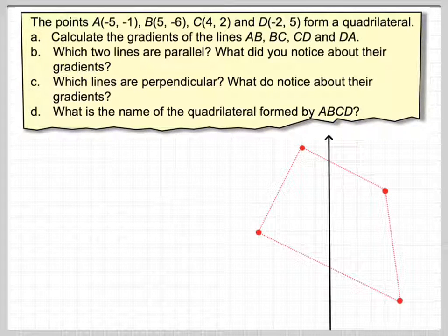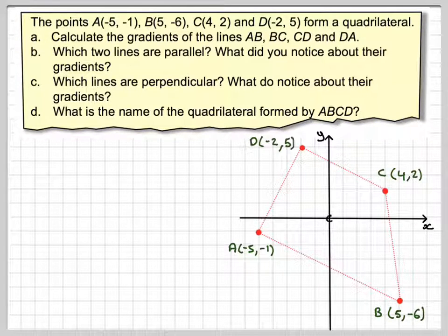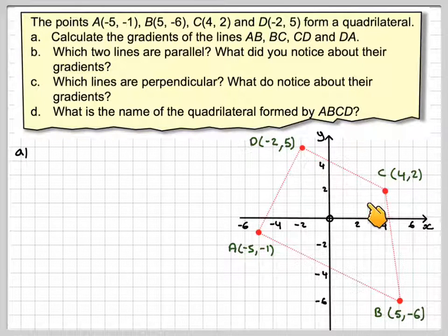Okay, so drawing a diagram, this time I'm just going to draw the diagram straight away without plotting the points. We see we get a quadrilateral here. If you can draw a diagram, it's easier to actually see what's going on. So we're asked to calculate the gradient of each line.